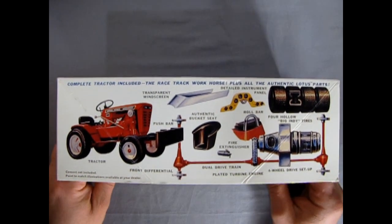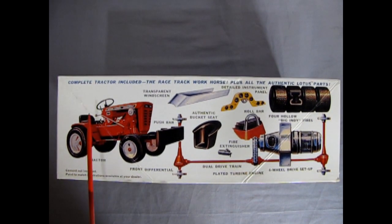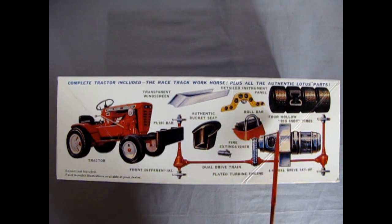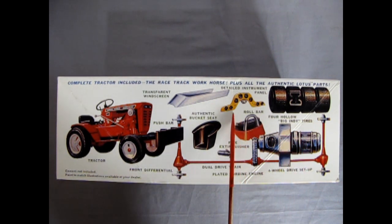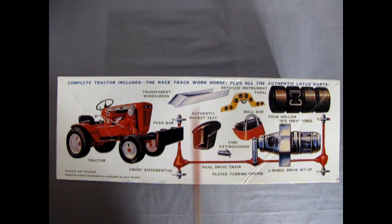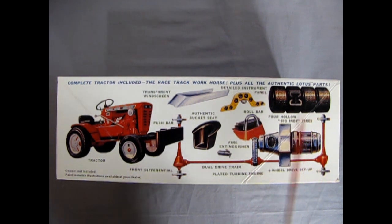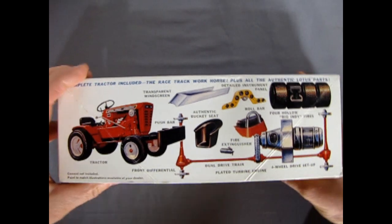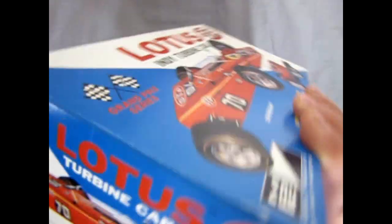And here we get our amazing features of a complete tractor which is included, the racetrack workhorse. Plus all the authentic Lotus parts. Four hollow big Indy tires. The detailed instrument panel. Transparent windscreen. Authentic bucket seat. Fire extinguisher. Dual drivetrain. Plated turbine engine. Four-wheel drive setup. And then the tractor that has the push bar. Paint to match illustration available at your dealer, the model kit dealer of course.